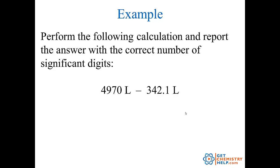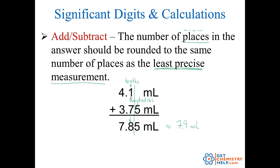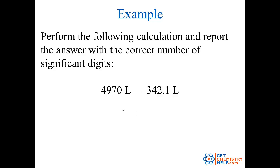Let's do one more example with addition and subtraction: 4,970 minus 342.1. It's handy to line these up by their places — ones, tenths, hundredths all lined up. I punch it into my calculator and get 4,627.9 liters.